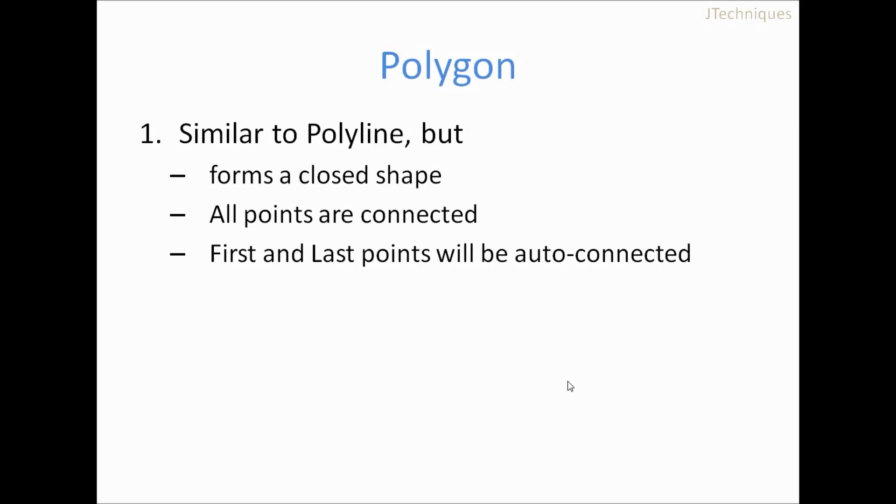Now let's look at polygon. Polygon is similar to polyline but it's a closed shape. That is if you provide a particular set of points like the array we provided, it connects all the points and finally the first and last coordinates are connected forming a closed shape. Let's look at a demo.